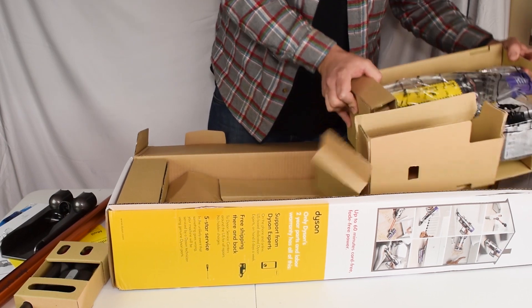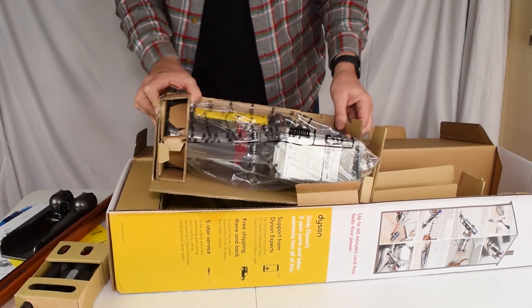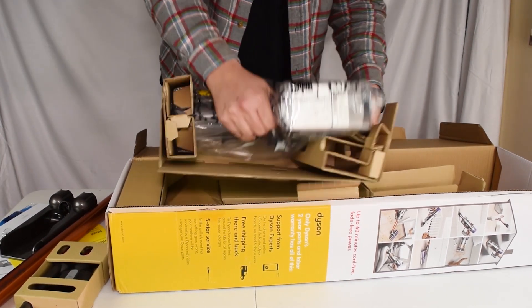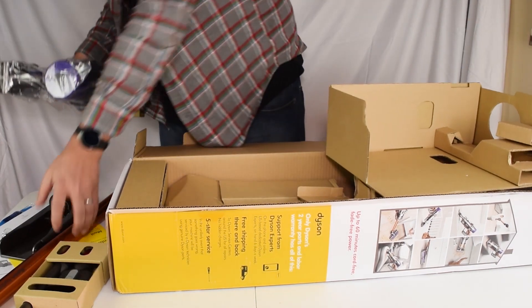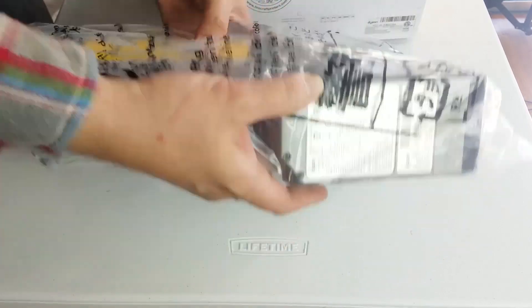This looks like the main motor unit and dustbin. It comes in its own little prepackaged box. So it's wrapped in plastic.